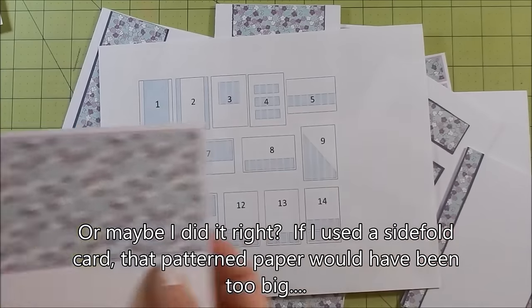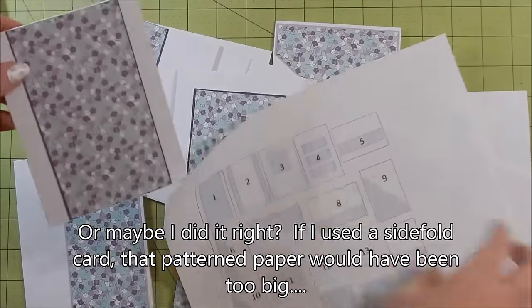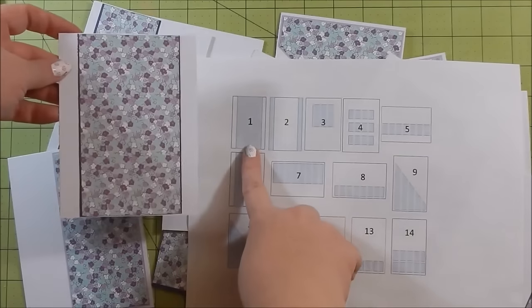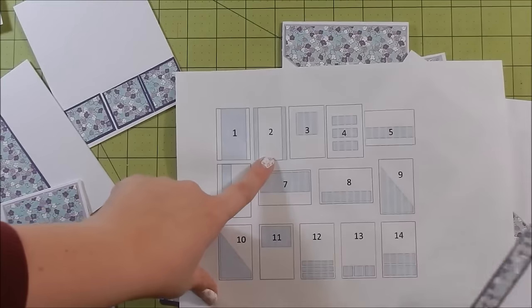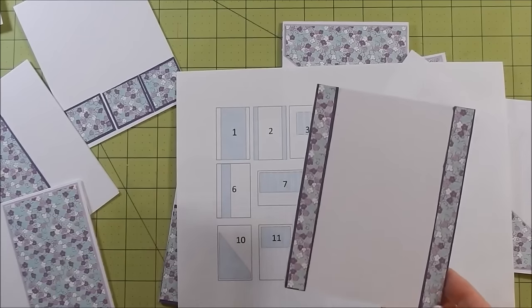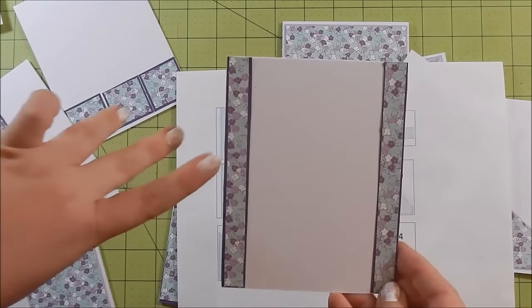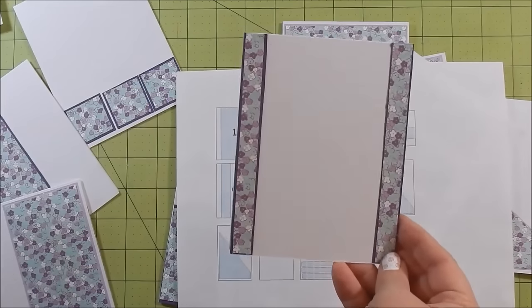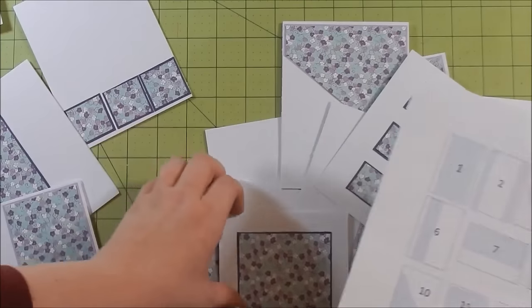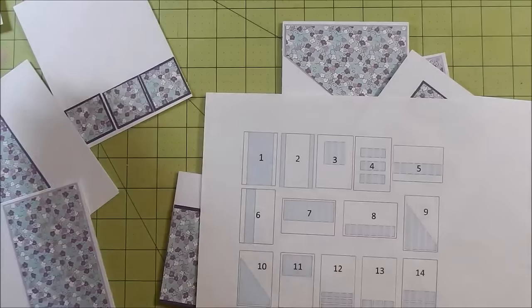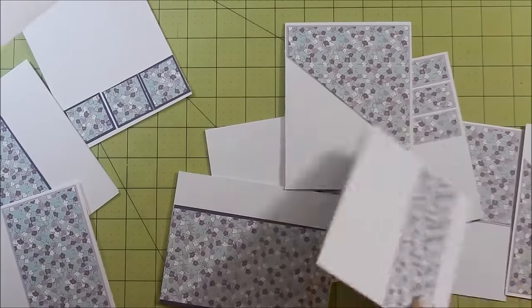So here would be card one. And then just to kind of show you each one - card two would be this one. And I got out washi tape but I decided against it because the border of the solid paper was fine with me. If you didn't want to take the time to do the border, the solid color underneath, that would be a good time to add washi tape if you wanted something extra. For card three, card four...